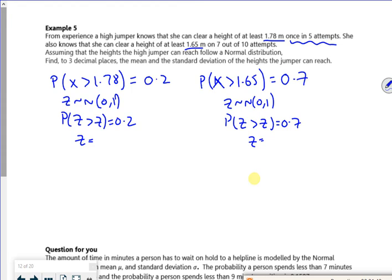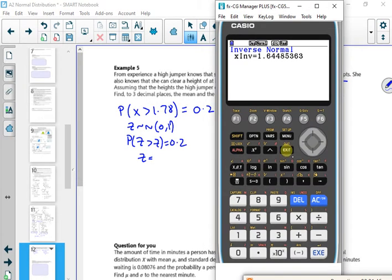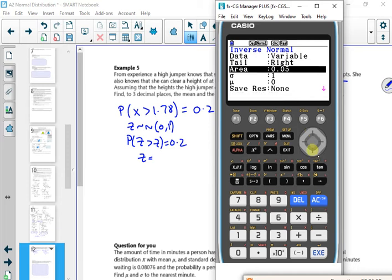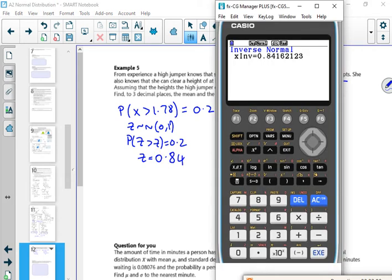Right so, find the calc. So inverse normal, right hand tail, area is 0.2, gives me a Z value of 0.84 something rather, wasn't it. 0.8416.